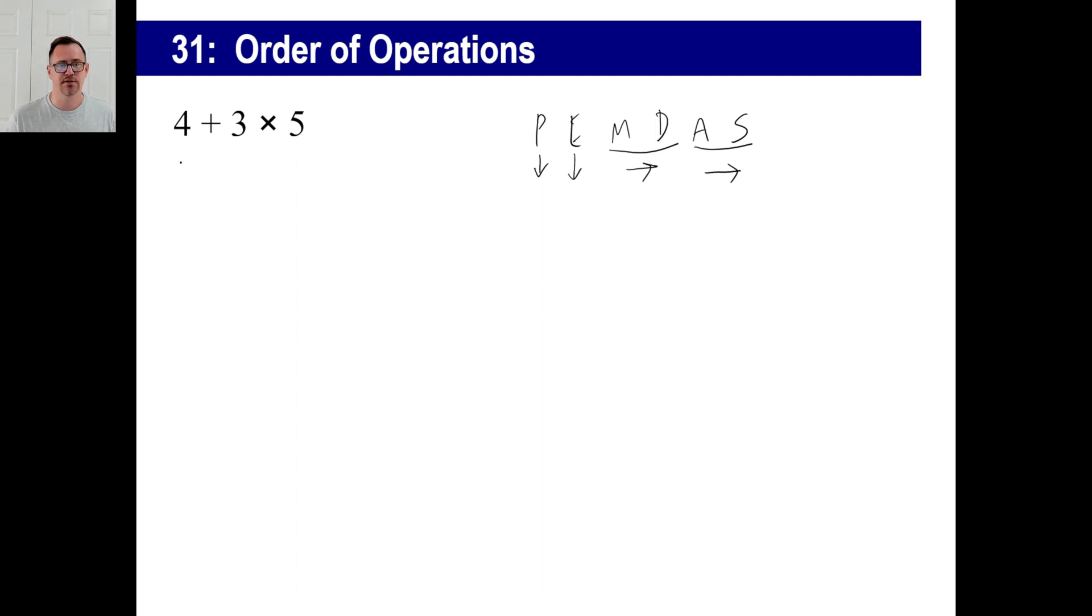So if you look at this one, you got 4 + 3 × 5. Well, if you look, you've got two operations. You've got adding and you've got multiplying. So this comes before addition. So this is the way that we are going to do it. We're going to say it's going to be 4 + 15, which is 19.